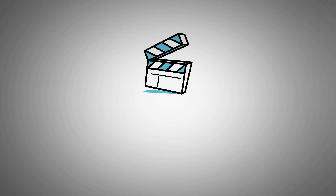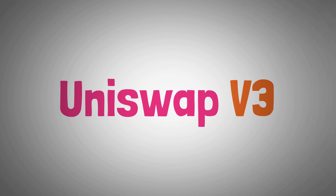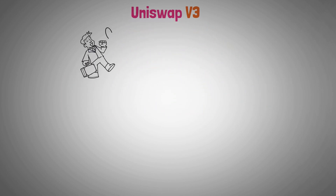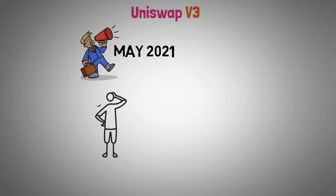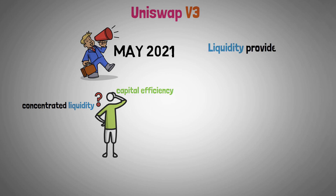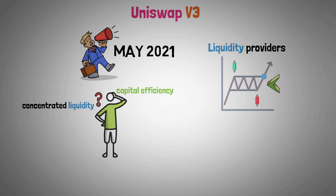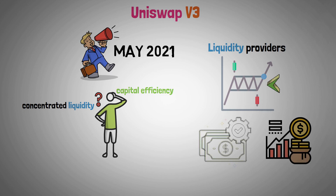Let's begin by explaining the last Uniswap V3 update. Uniswap V3, which was introduced in May 2021, aimed to address problems with concentrated liquidity and capital efficiency. Liquidity providers can now specify the price ranges within which their assets will be used, resulting in greater capital utilization and higher fees.